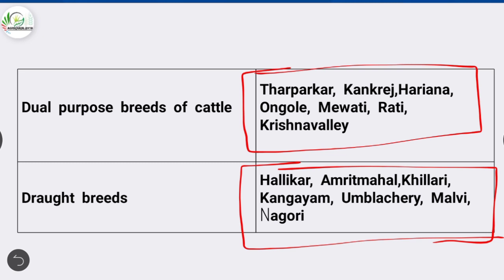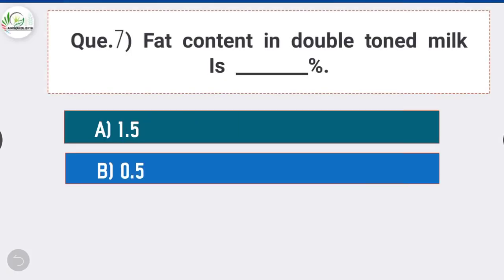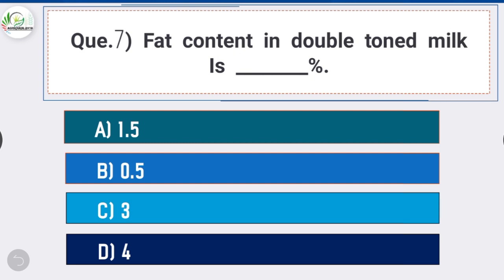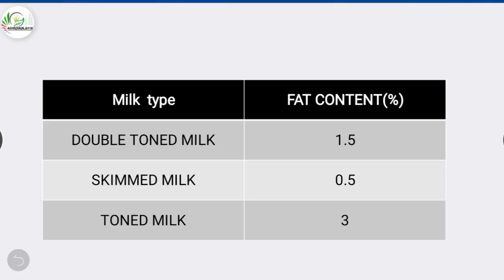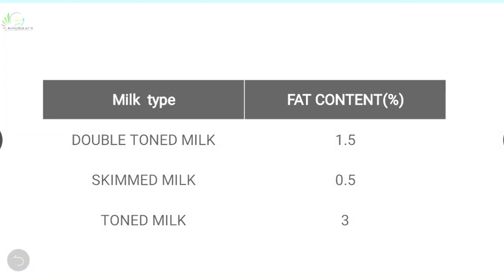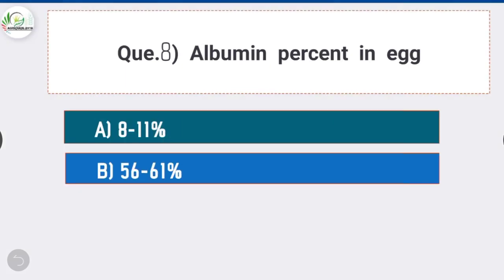Question number seven: the fat content in double toned milk is what percentage? The answer is option A - 1.5 percent. Fat content in double toned milk is 1.5 percent. Fat content in skimmed milk is 0.5 percent, and fat content in toned milk is 3 percent. Next question, question number eight: the albumin percent in egg is what?